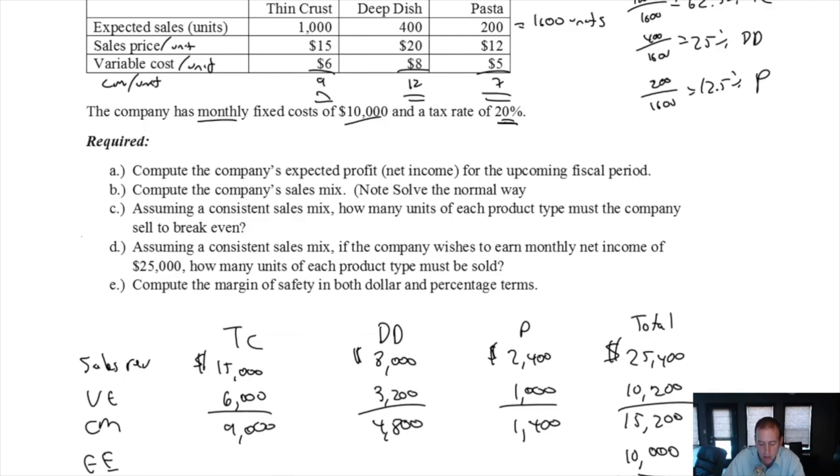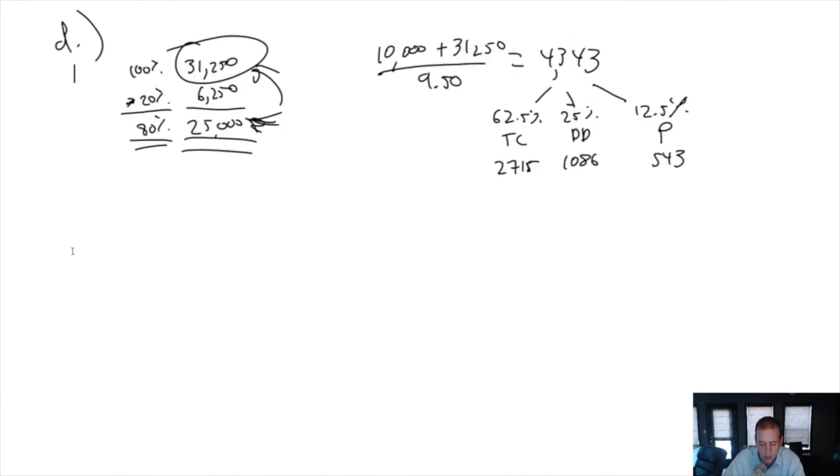On to part E. Part E says, compute the margin of safety in both dollar and percentage terms.